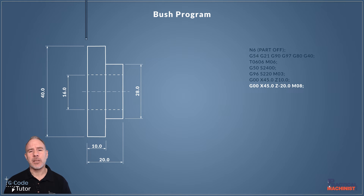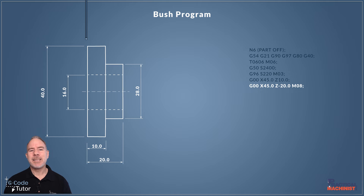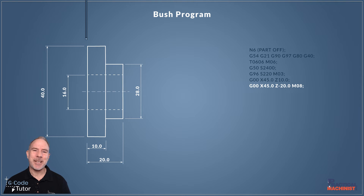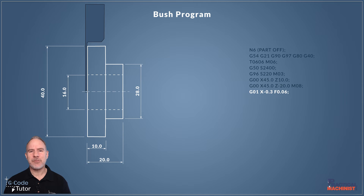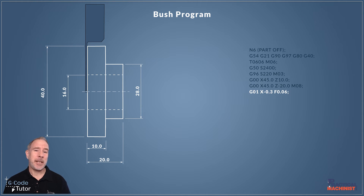M08 turns the coolant on. I turn the coolant on once I've done my initial rapid to the front face of the part — I can check the tool, make sure everything looks right, then turn the coolant on as I'm moving towards my first cut. This stops coolant splashing on the screen so we can see what's going on. We're now switching over to G01, our feed rate move, so all positions now need a feed rate as we're controlling the speed of our tool, which ties in with the constant surface cutting speed.